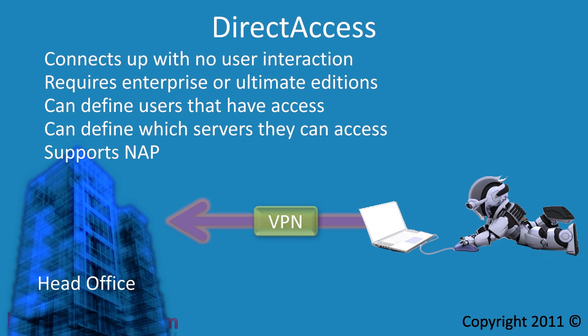These compliance checks can involve ensuring virus software is installed and enabled, a firewall is operating, and the latest Windows updates have been installed. If you have NAP configured on your network, direct access will first check with NAP to make sure the computer is compliant before allowing it on the network.